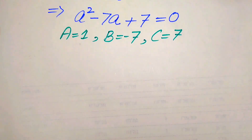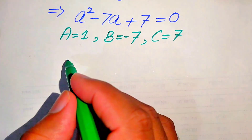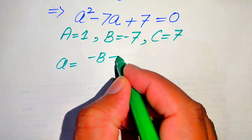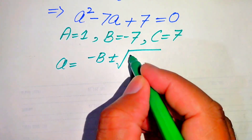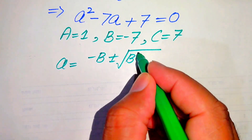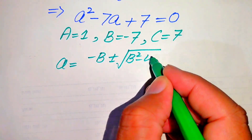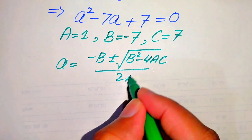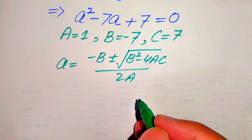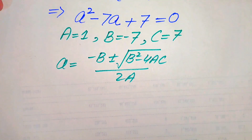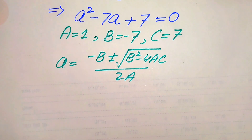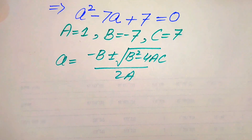The quadratic formula is: A equals minus B plus or minus square root of B squared minus 4AC, divided by 2A. We now substitute the values of A, B, and C into this formula.